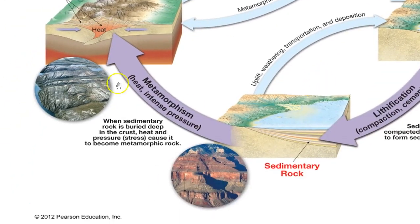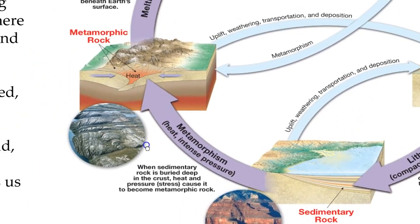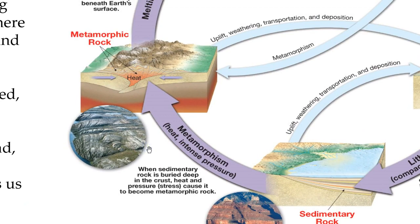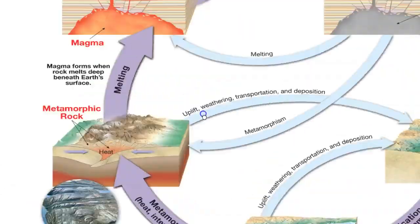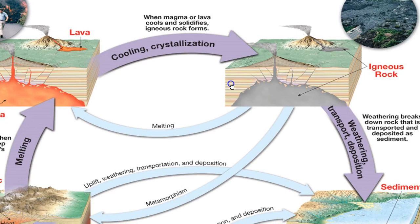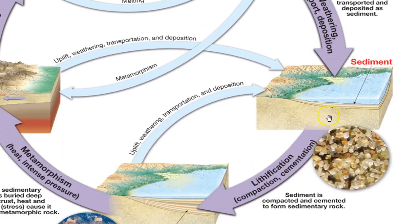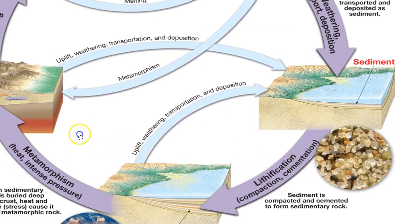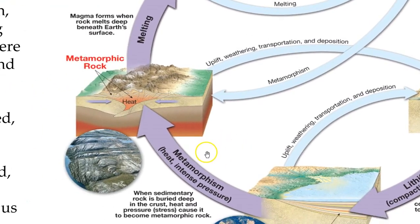Looking at our third rock type — metamorphic rock — what's unique about metamorphic rock is that it has to come from a preexisting rock. You have to physically alter that rock through heat, pressure, or chemically active fluids. So it's beneficial to know how these rocks form: cooling and crystallization makes igneous rocks, lithification makes sedimentary rocks, and the metamorphic process makes metamorphic rock.